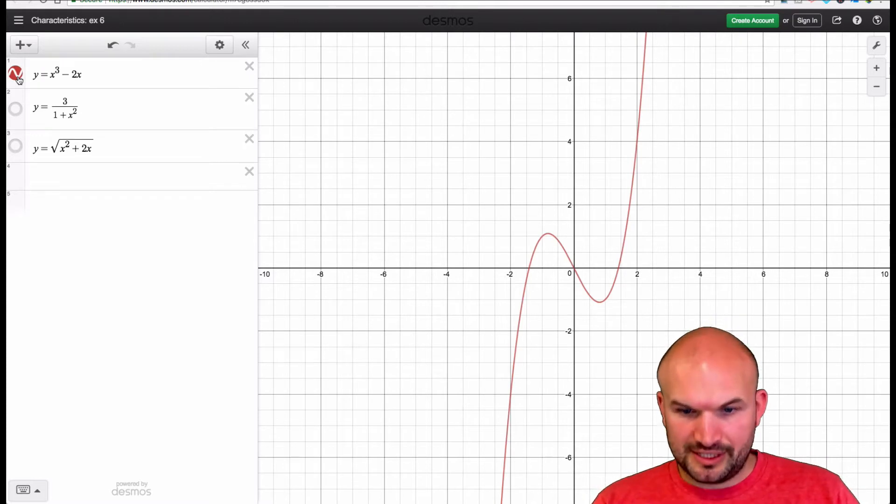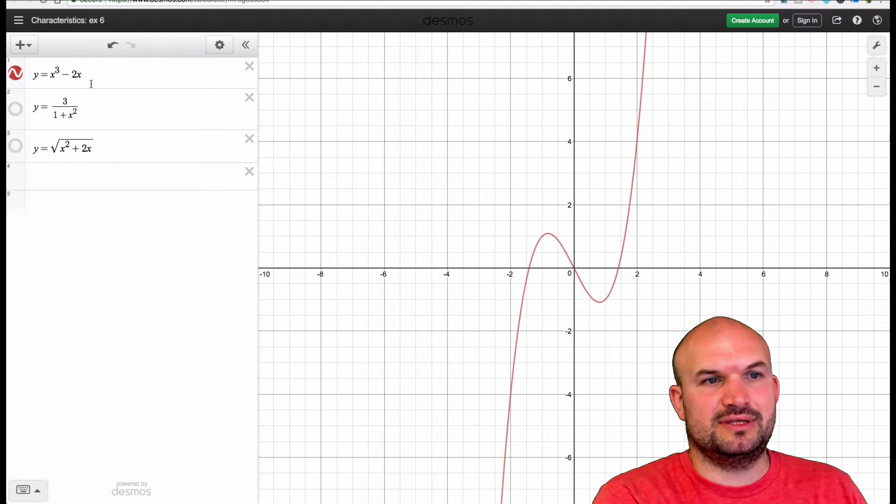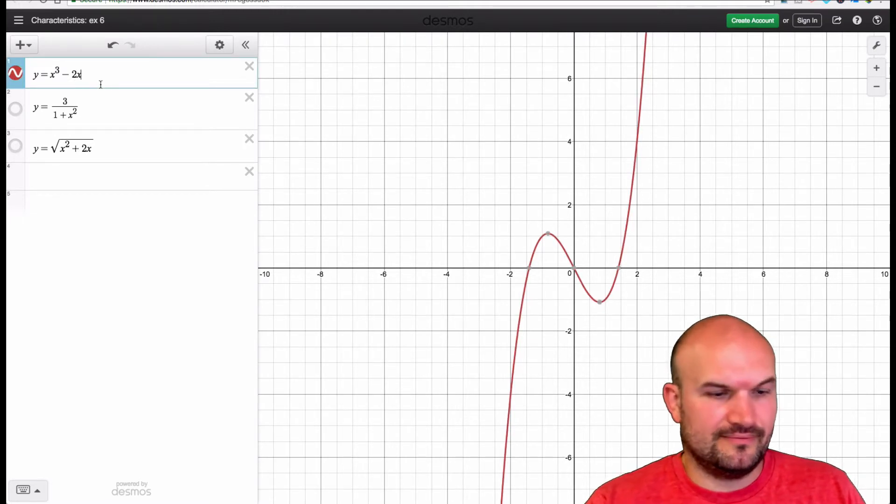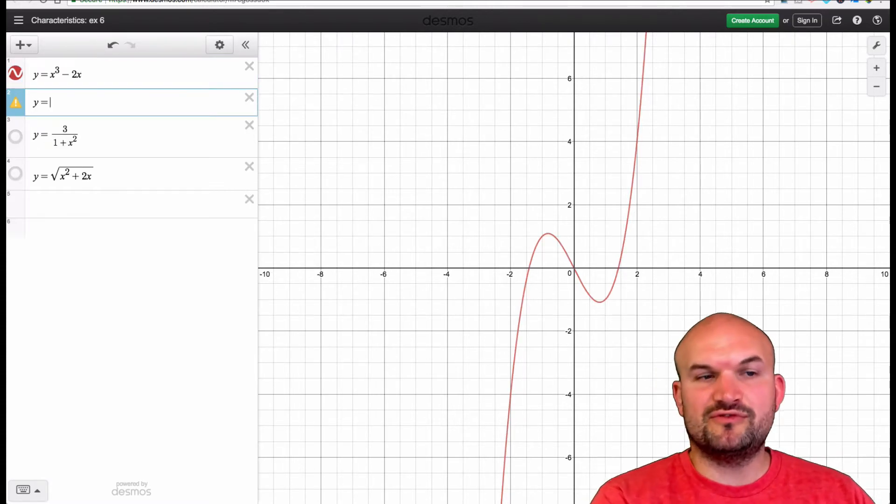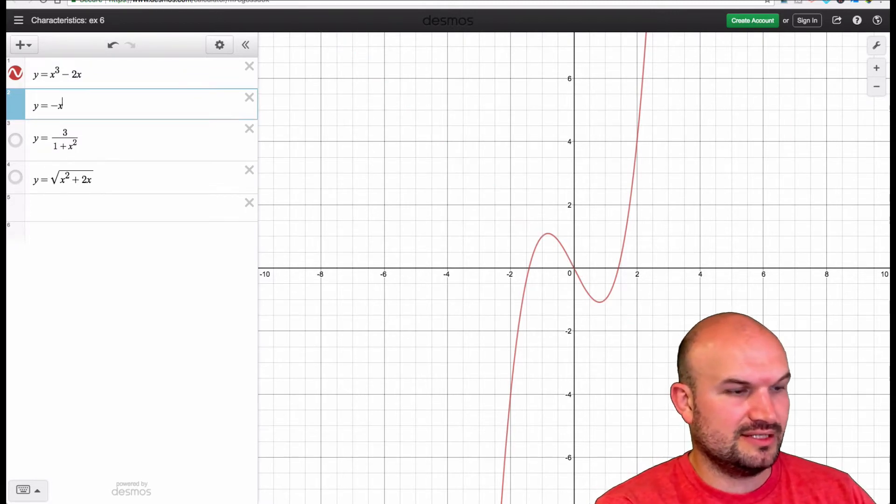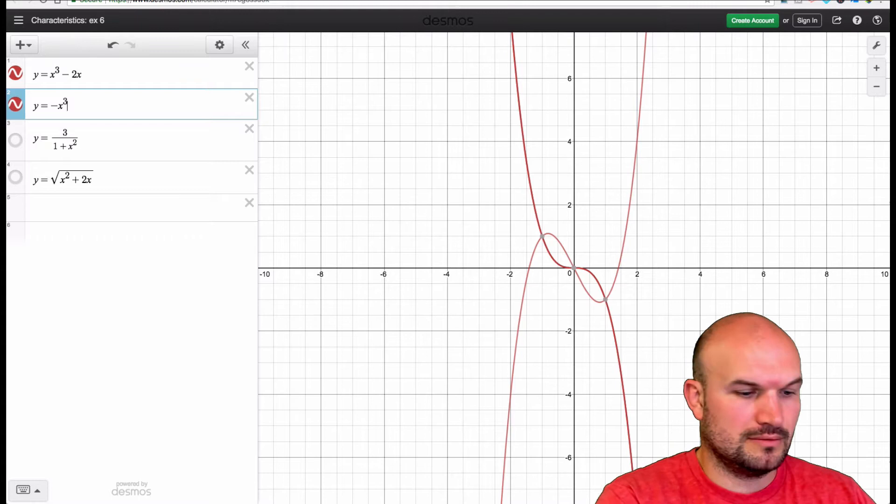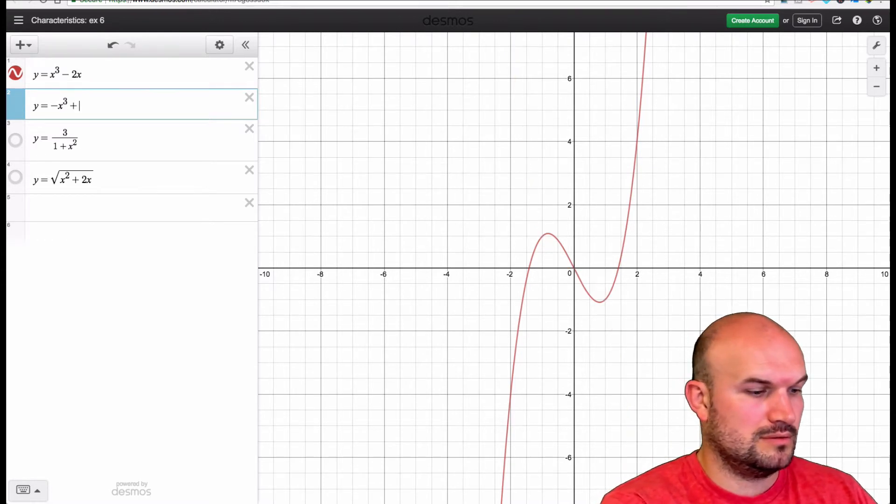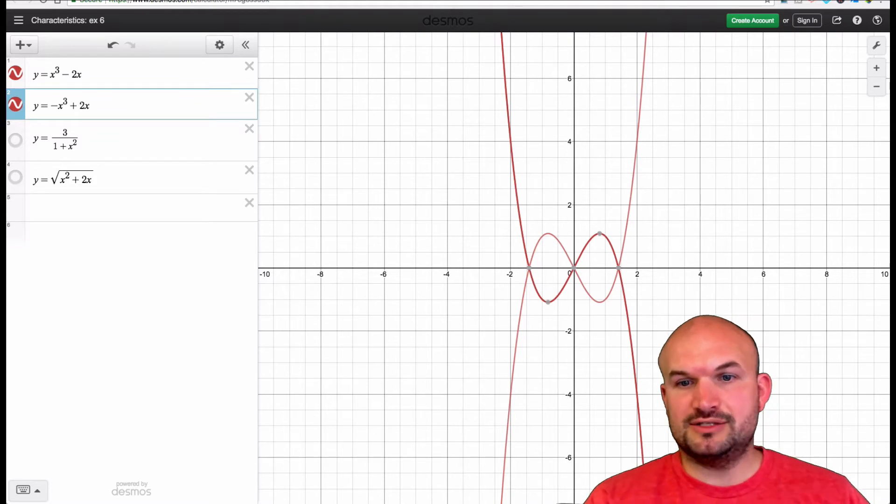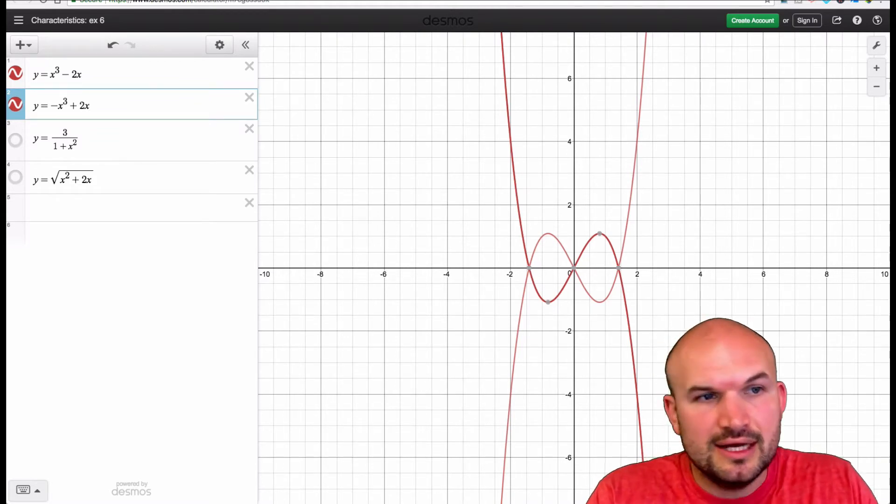So let's look at the first example here. If we were just to reflect this graph about the y-axis, then it would look something like this. You can see that the graph is being reflected by the y-axis, but it's not exactly the same.